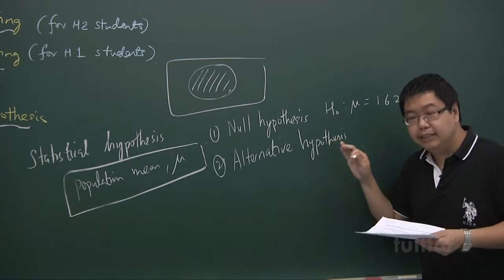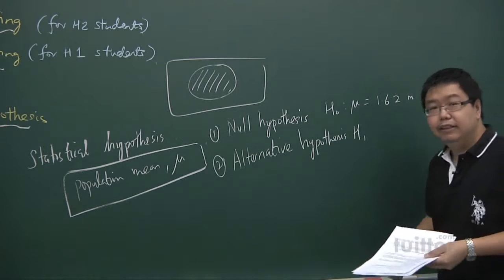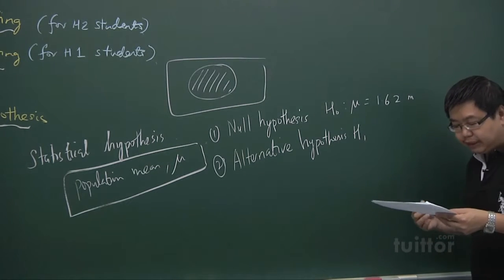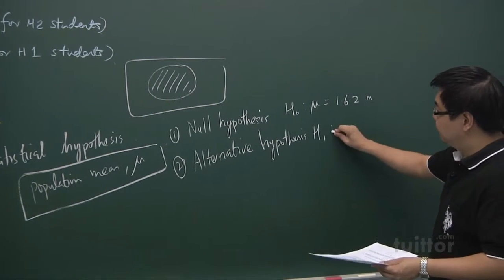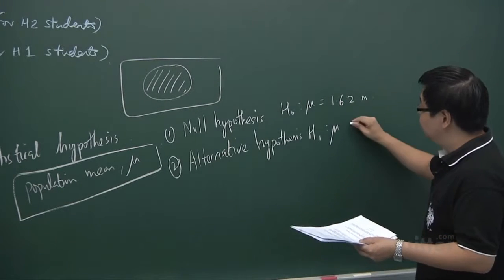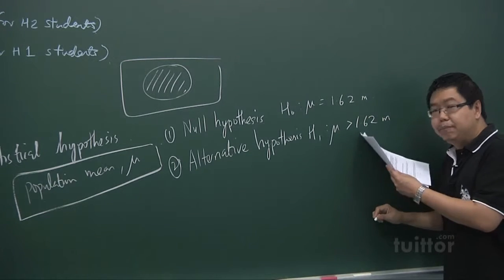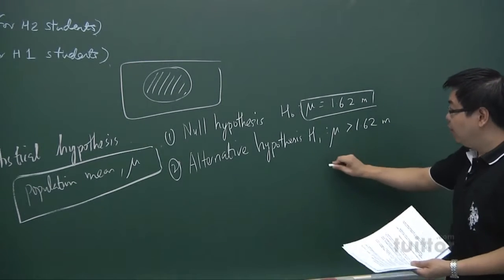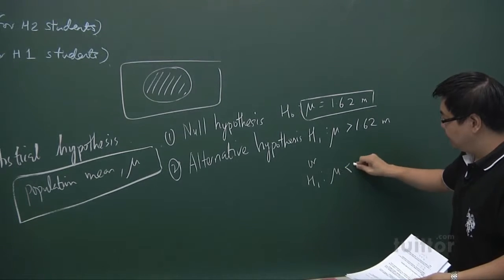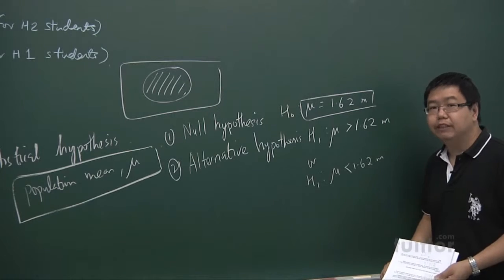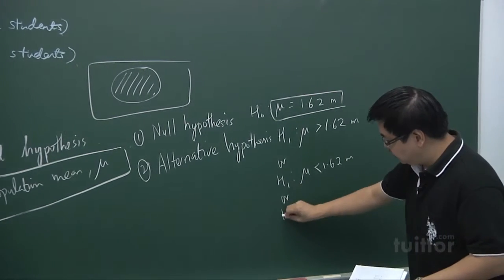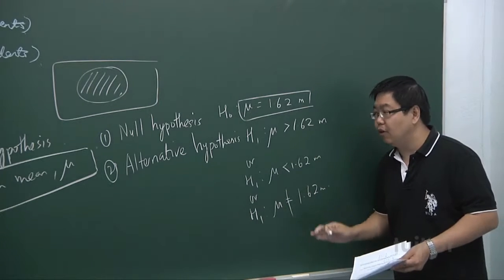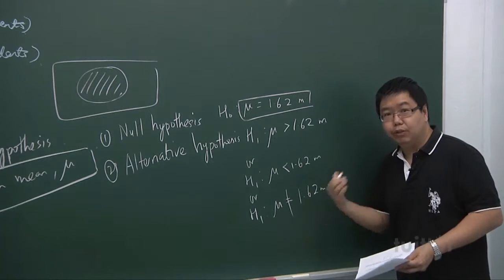The Alternative Hypothesis is a statement that something is happening. H1 is the notation for the alternative hypothesis, and it's generally what the researcher hopes to prove — a statement that assumes the status quo is false, or that there is a relationship or difference. For example, we may test that mu equals 1.62 against mu greater than 1.62, meaning the researcher believes average height has increased. Or we may test mu less than 1.62, believing the original value is an overestimate. Or the person may just be testing whether there is any change from 1.62 meters. So generally there are three types of alternative hypothesis depending on what you are looking for as a researcher.